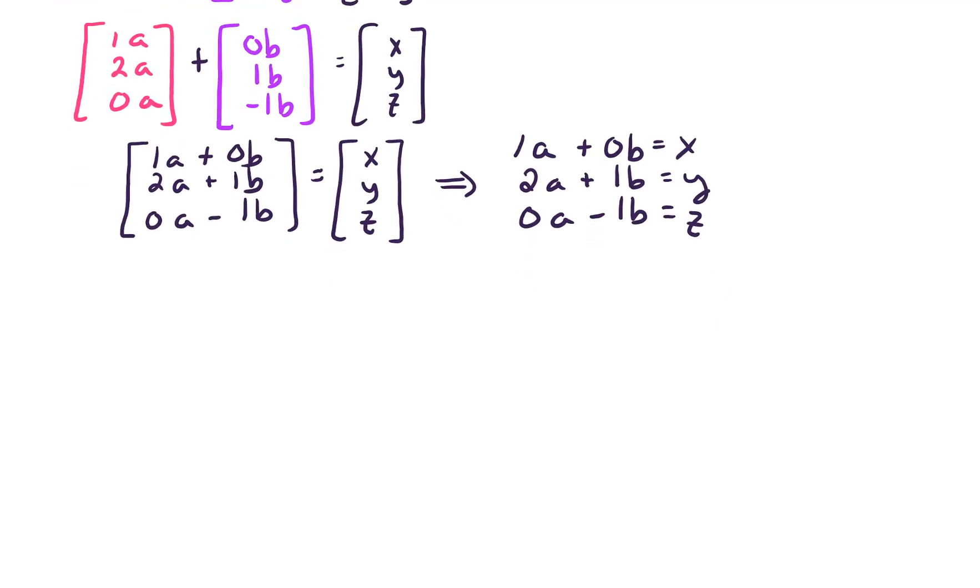In other words, if we put this in our augmented matrix, we just get our column vector for u, which was 1, 2, 0, and we see that popping out right there. We get our column vector for v, 0, 1, and negative 1, we see that as our coefficients right there, and then our constants x, y, and z.